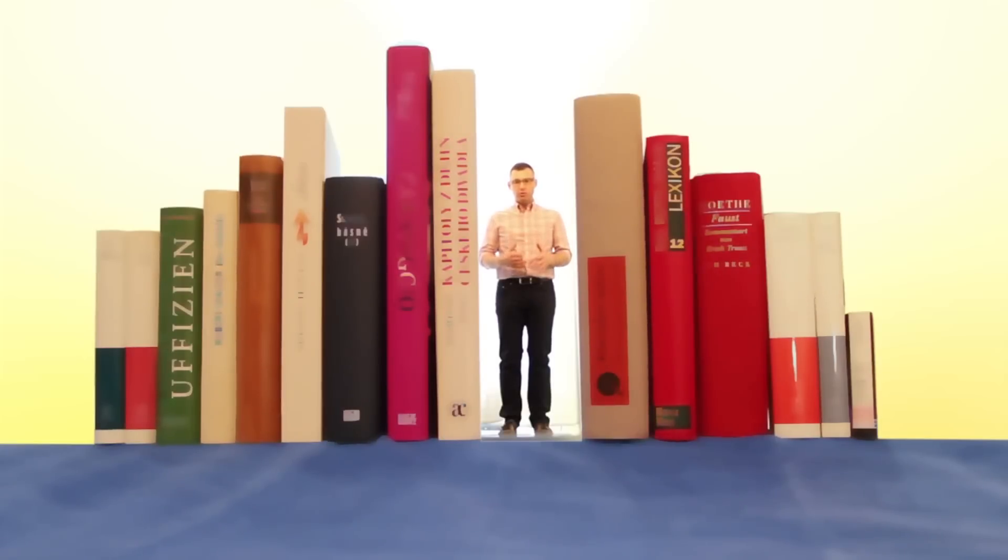But what if we want to know the shape of the distribution, recognize the modes, or see if it is skewed? Are there any alternatives to the histogram for the usual sample sizes?